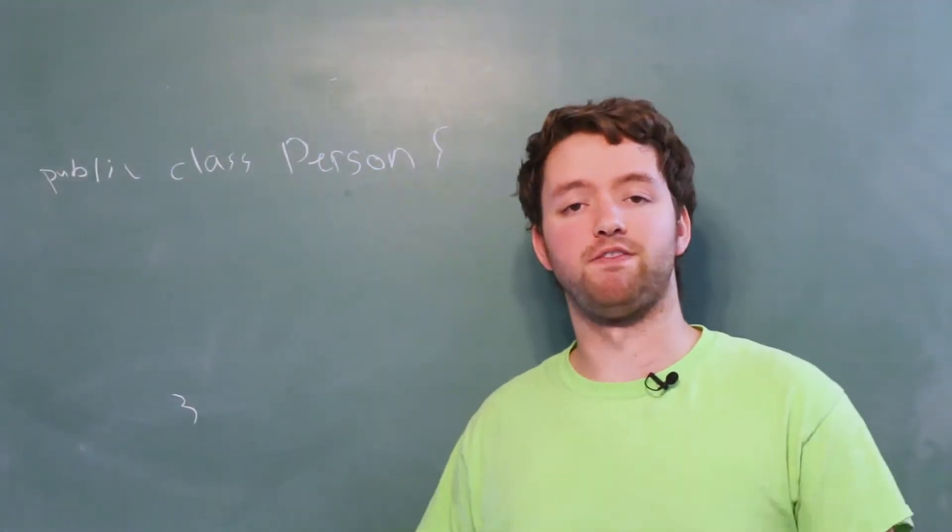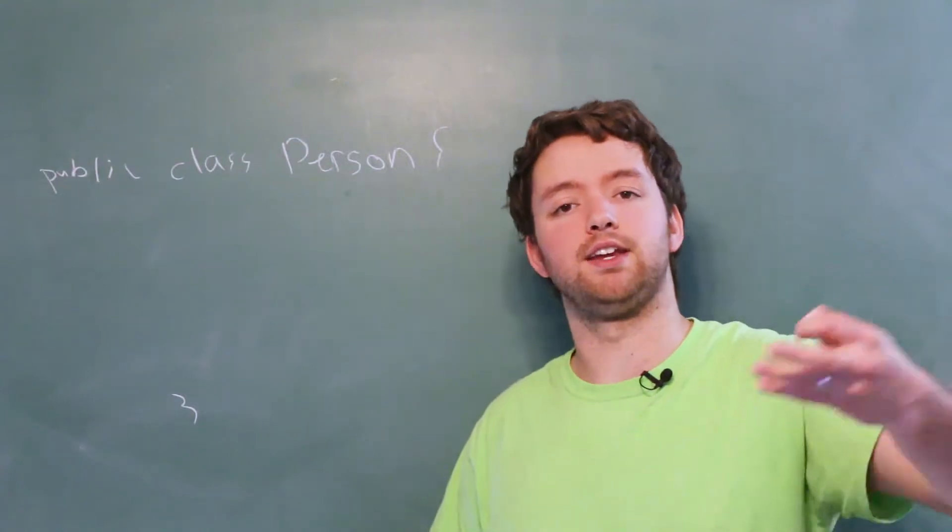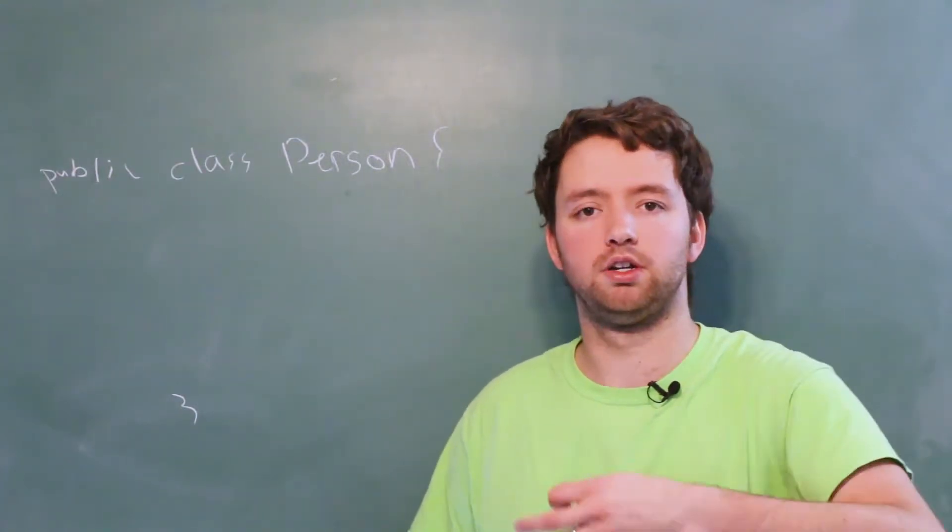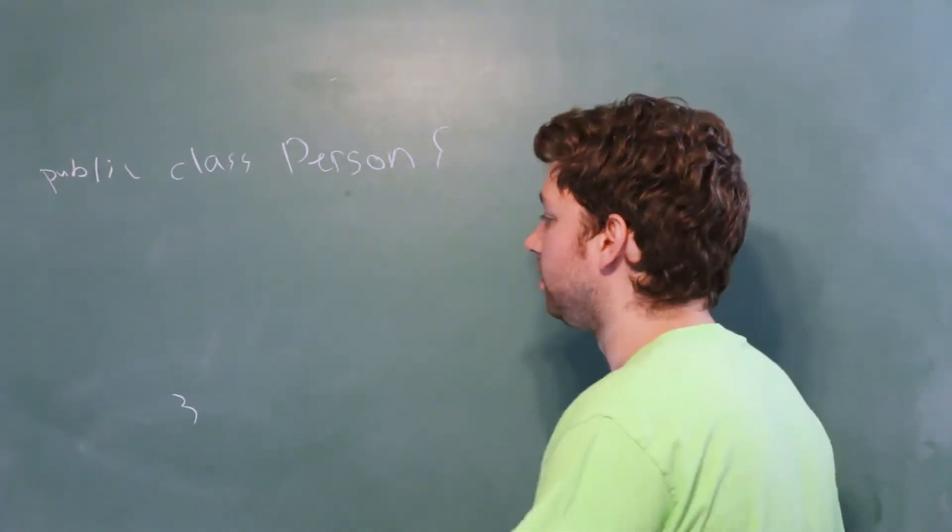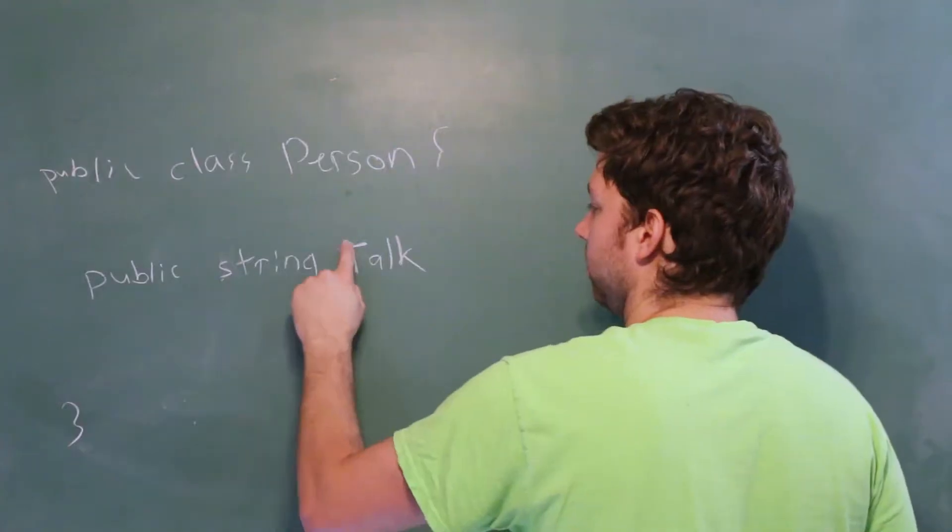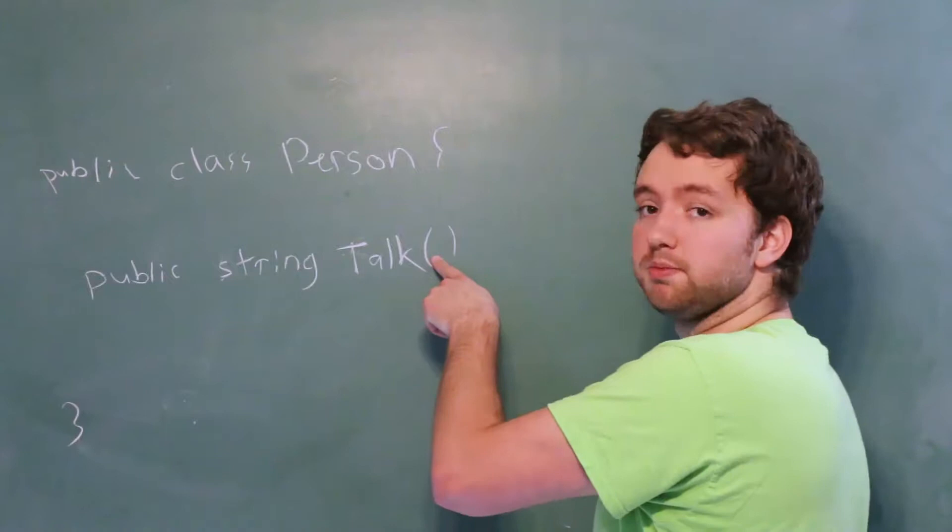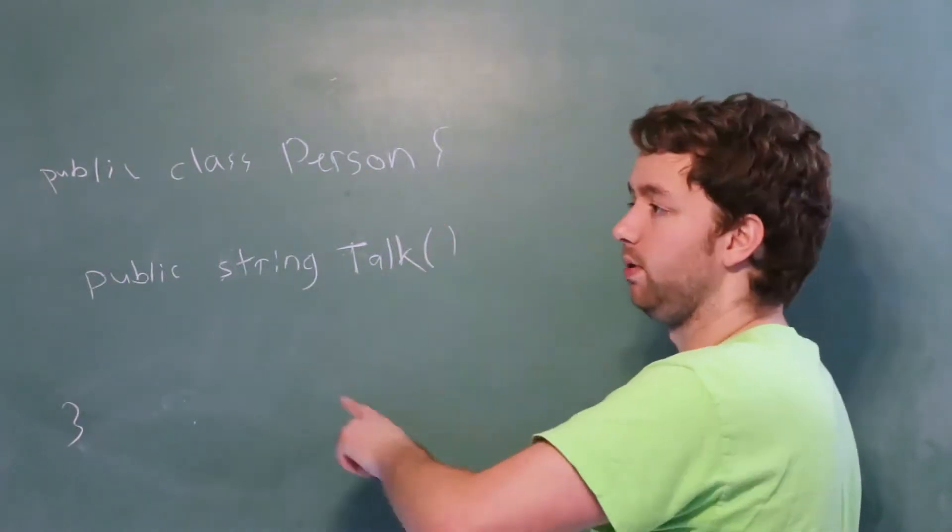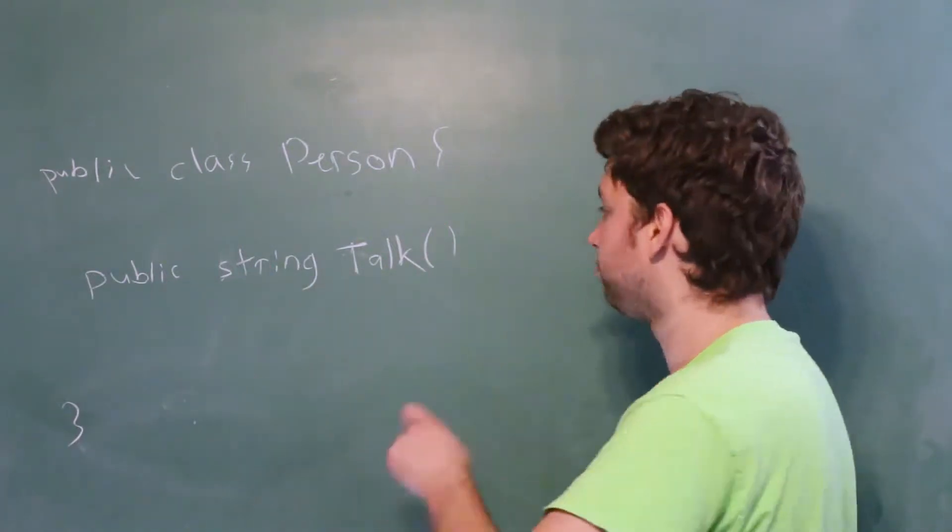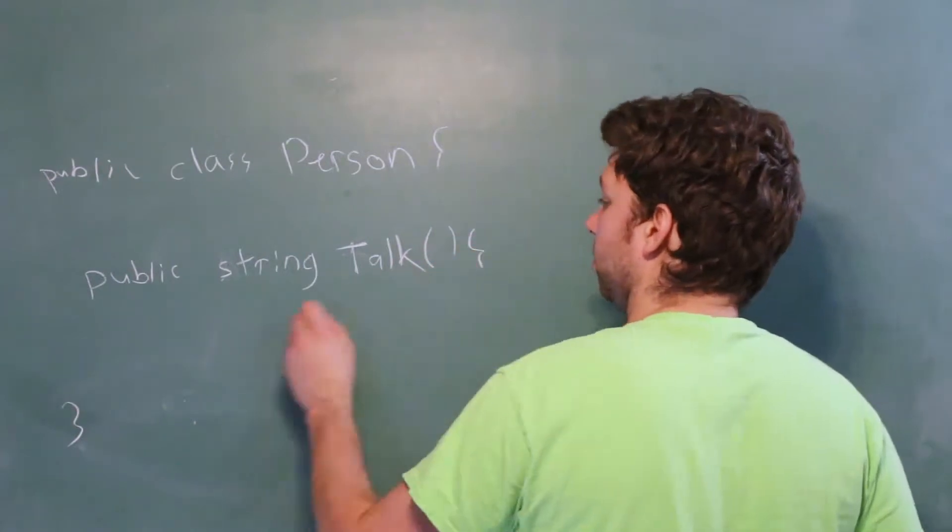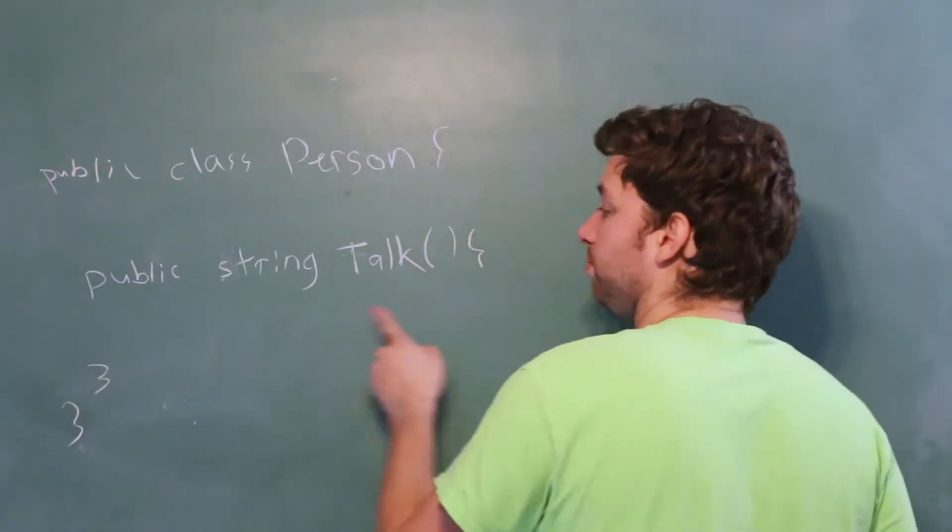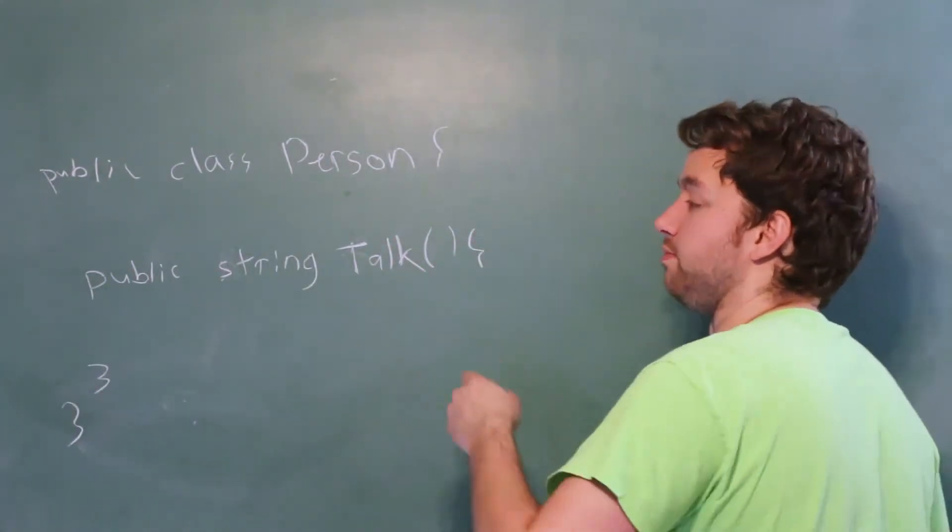So a method is just another name for a function. It does something. It can take input and give out output. So a simple example for a person might be a method called talk. We put the parentheses. If we want to have any arguments passed in, we would create parameters here and we'll get into practicing this later on and then we open it with curly braces and then we can put our code, our logic for the method here.